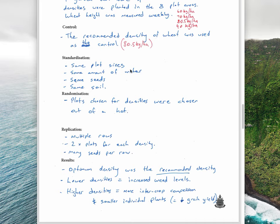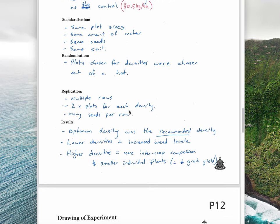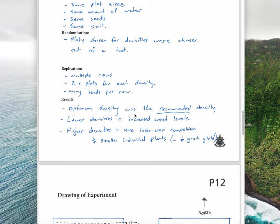In terms of standardization, we used the same plot sizes, same amount of water, same seeds, and same soil. For randomization, we chose the plots from out of a hat to reduce bias. For replication, we had multiple rows, two plots for each density, and lots of seeds per row depending on the density.